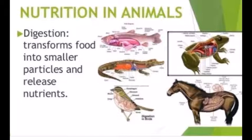Fat gives almost twice the energy of carbohydrates. One gram of carbohydrate or protein provides 16–17 kilojoules, while one gram of fat gives 37 kilojoules. We should be careful about fat consumption. The WHO recommends that an average person needs 0.57 grams of protein per kilogram of body weight.